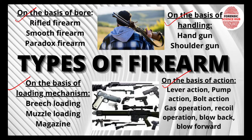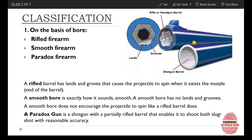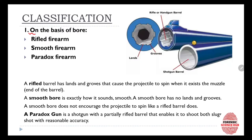First is the classification on the basis of the bore. The bore is the inner portion of the barrel of the firearm. The bore can either be rifled or smooth, so on the basis of bore, a firearm can also be either rifled or smooth.